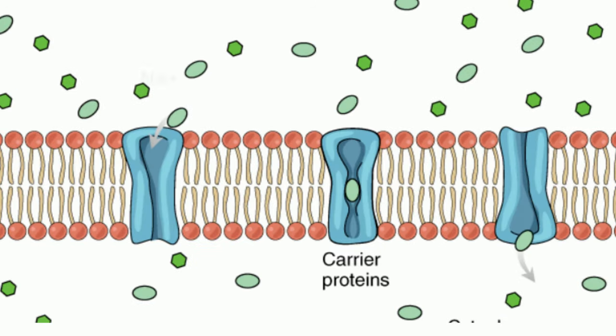In order for glucose, ions, and polar molecules like water to enter the cell, their movement must be facilitated by proteins that span the membrane and provide an alternate route into the cell.